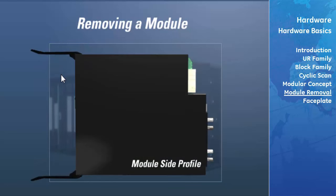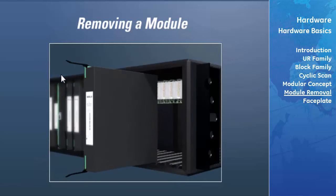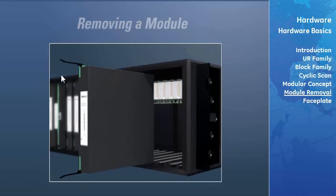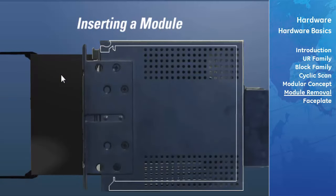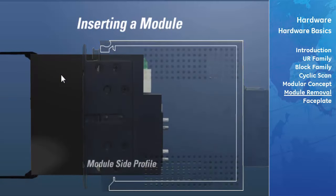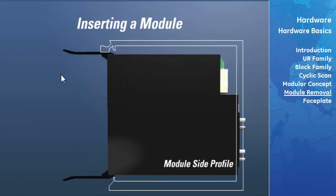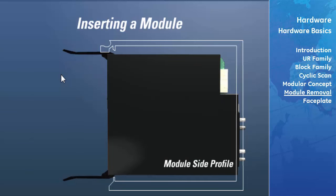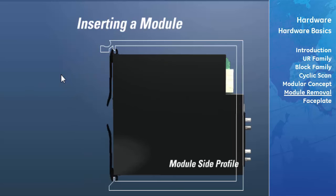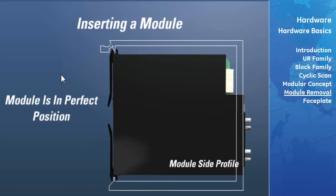Modules with current input provide automatic shorting of external CT circuits. To withdraw a module, pull the ejector-inserter clips located at the top and bottom of each module simultaneously, and the module then pulls out smoothly. To insert the module, the ejector-inserter clips must be in the disengaged position as the module is smoothly inserted into the slot. Once the clips have cleared the raised edges of the chassis, engage the clips simultaneously, and the module will be fully positioned in the relay.